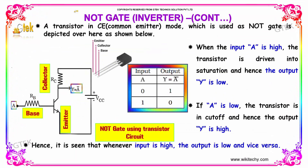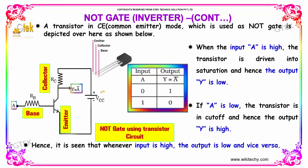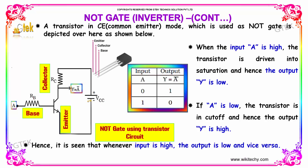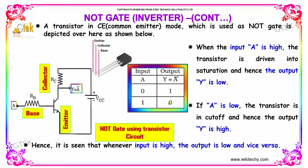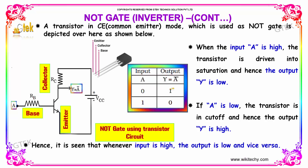A transistor in common emitter mode, CE, which is used as a NOT-GATE, is depicted here. This is a NOT-GATE using a transistor circuit. When the input A is high, the transistor is driven into saturation, hence the output Y is low. If A is low, the transistor is in cutoff and hence the output Y is high.